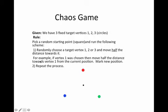You choose randomly one of the targets to go towards. So imagine I have selected the red one and what I do is I go half the way towards that target from my current location.